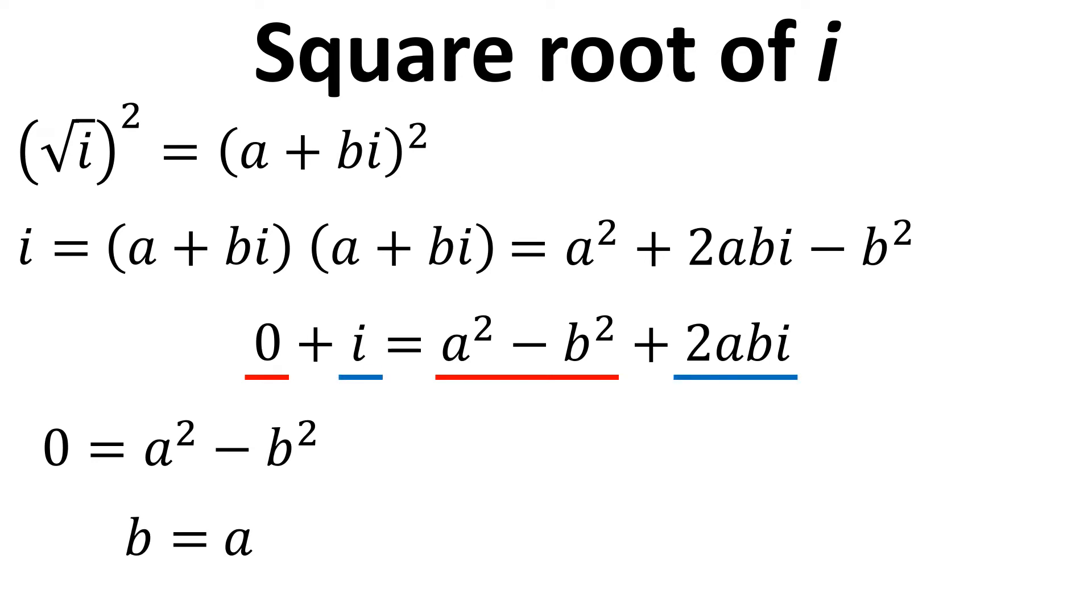Now if we compare the imaginary parts we have i equals 2abi, if we divide both sides by i we've got 1 equals 2ab. If we substitute in for the fact that b equals a we end up with 1 equals 2a squared. Rearranging this gives us a equals plus or minus 1 over square root of 2 and we also know that b equals a.